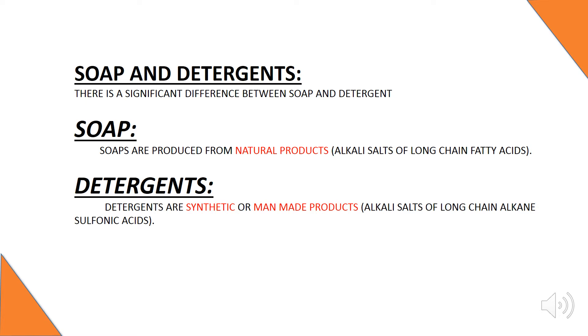So what are soap and detergents? There is a significant difference between soap and detergents. Soaps are produced from natural products that are alkali salts of long chain fatty acids, whereas detergents are synthetic or man-made products that are alkali salts of long chain alkane sulfonic acid.